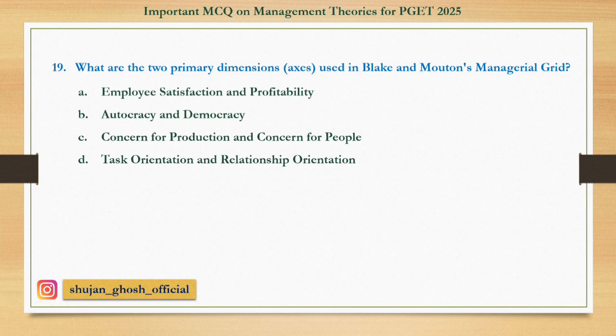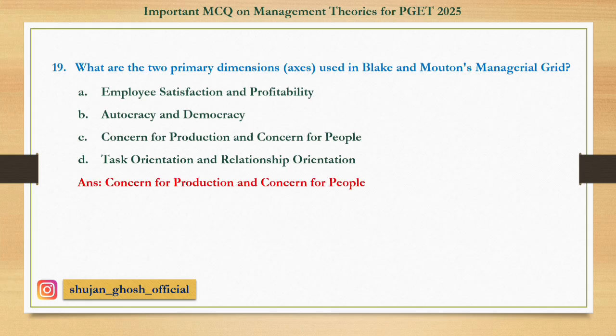Question number 19: What are the two primary dimensions used in Blake and Mouton's managerial grid? Option A: Employee satisfaction and profitability. B: Autocracy and democracy. C: Concern for production and concern for people. D: Task orientation and relationship orientation. Answer is Concern for production and concern for people.